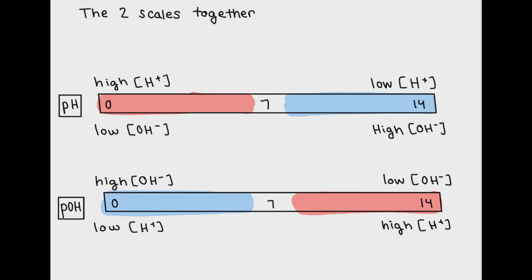Now let's look at the two scales side by side. Remember that chemists designate something as acidic, typically with a red color, and something that's basic, typically with a blue color. Here the colors really show how these two scales are inversely related.